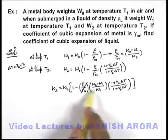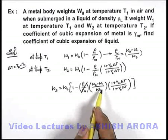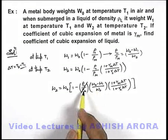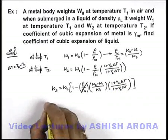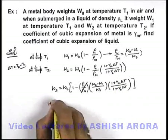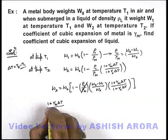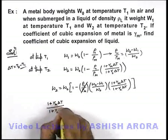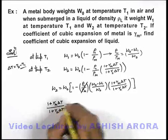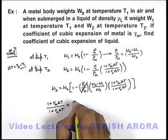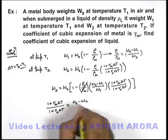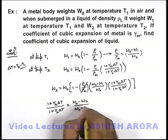And if we simplify this relation and we take terms of gamma on one side, we can see we get (1 + γₘΔT)/(1 + γₗΔT) is equal to (W₀ - W₂)/(W₀ - W₁).